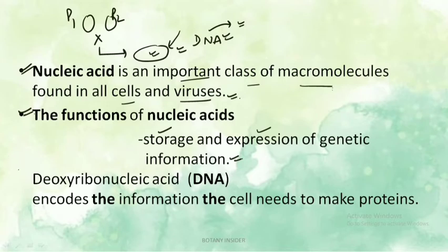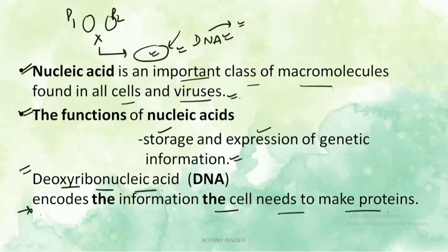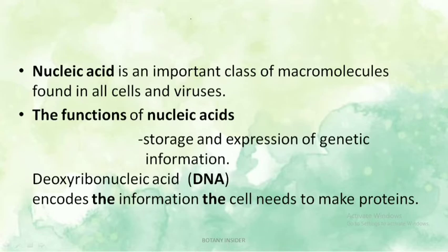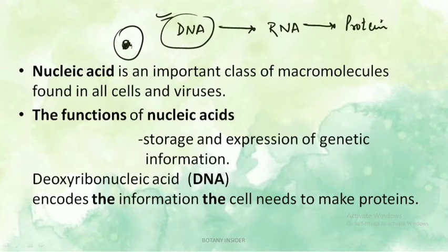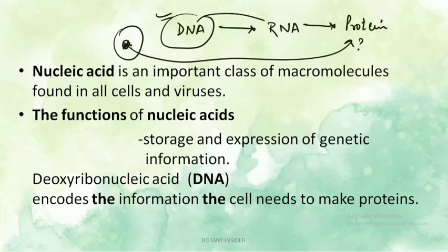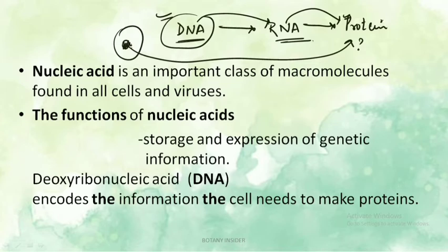DNA is the genetic material we carry and is a type of nucleic acid. DNA — deoxyribonucleic acid — encodes the information the cell needs to make proteins. The central dogma states that DNA converts into RNA, and RNA gets converted into protein. How DNA converts to RNA and RNA to protein will be dealt with in molecular processes, not in this video.